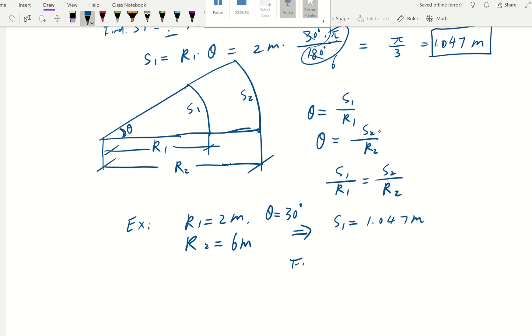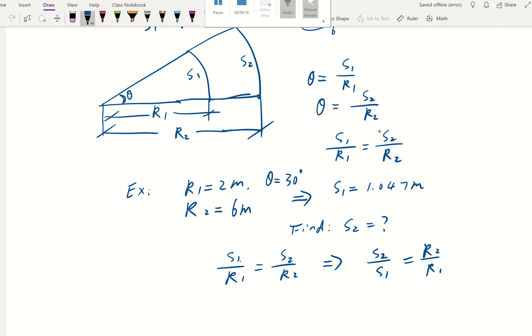Now I want you to find out what's going to be s2. We can use proportionality here. s1 over r1 is equal to s2 over r2. Then we can do s2 over s1 is equal to r2 over r1.